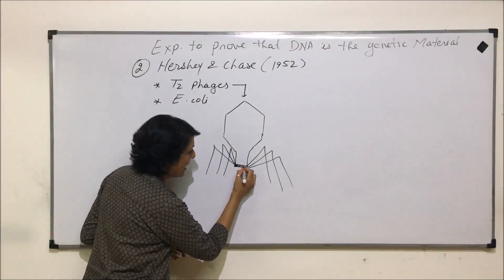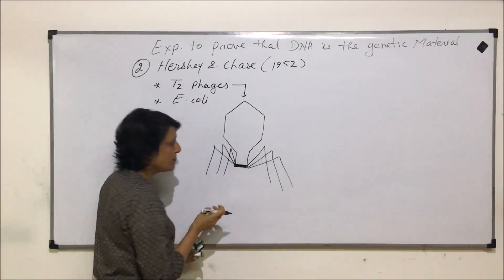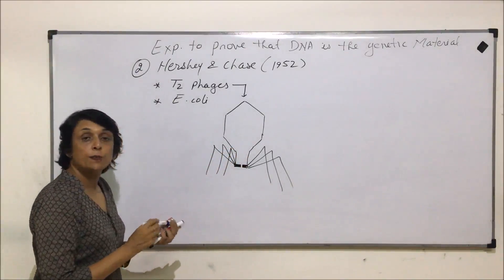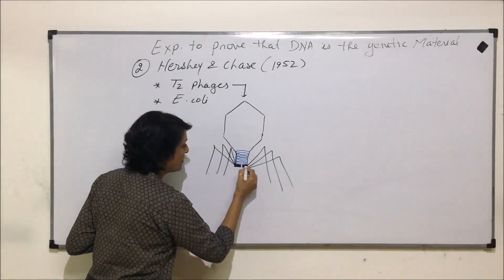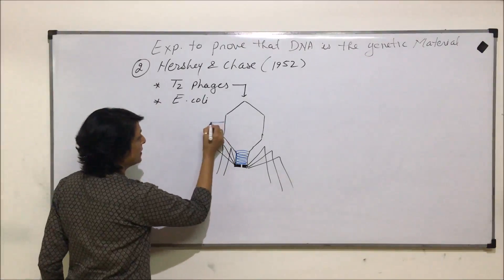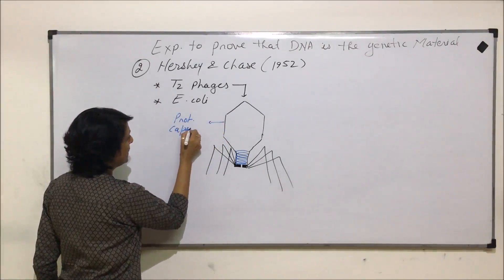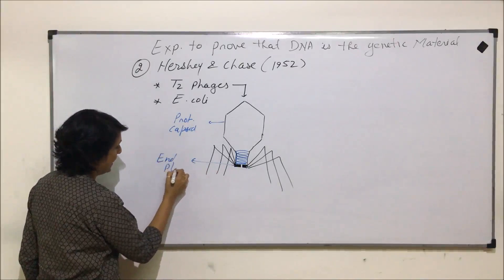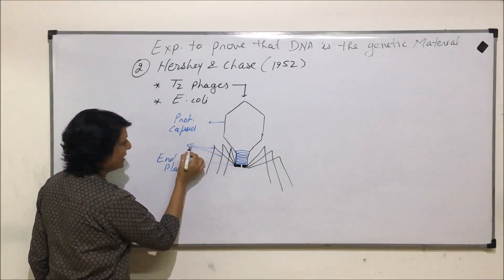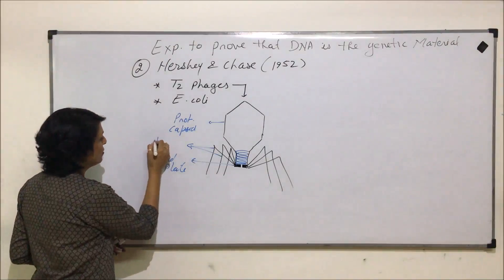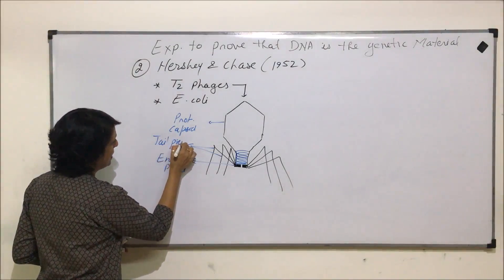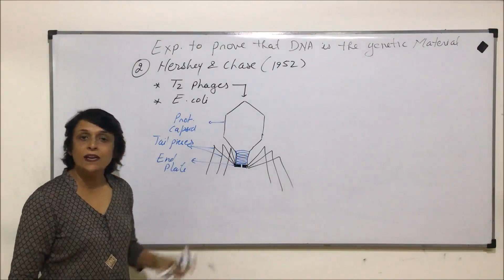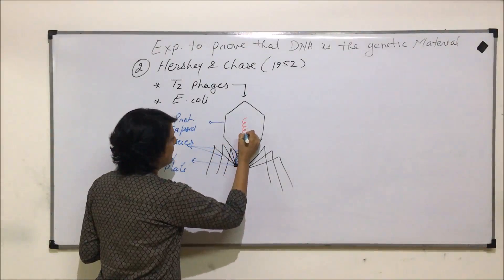This end piece or end plate has a perforation in the middle. In this middle part there is a spinal protein — a spring-like protein which is attached. This is the protein capsule. The dark line which we have drawn is the end plate, and these tail pieces or the leg-like structures are known as tail pieces or end pieces. Here there is a spring-like structure, and it has genetic material, that is DNA.